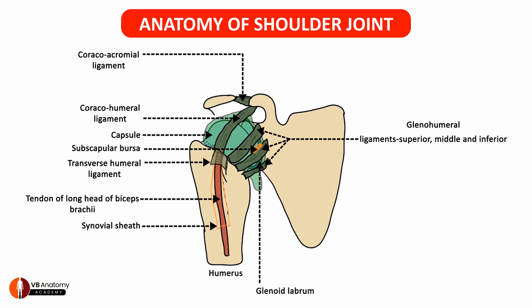You can see how the simple process of drawing this diagram has familiarized you with a number of anatomical structures which form a part of the shoulder joint. Please use this process repeatedly to ensure you know the anatomy of the shoulder joint well. Thank you students.